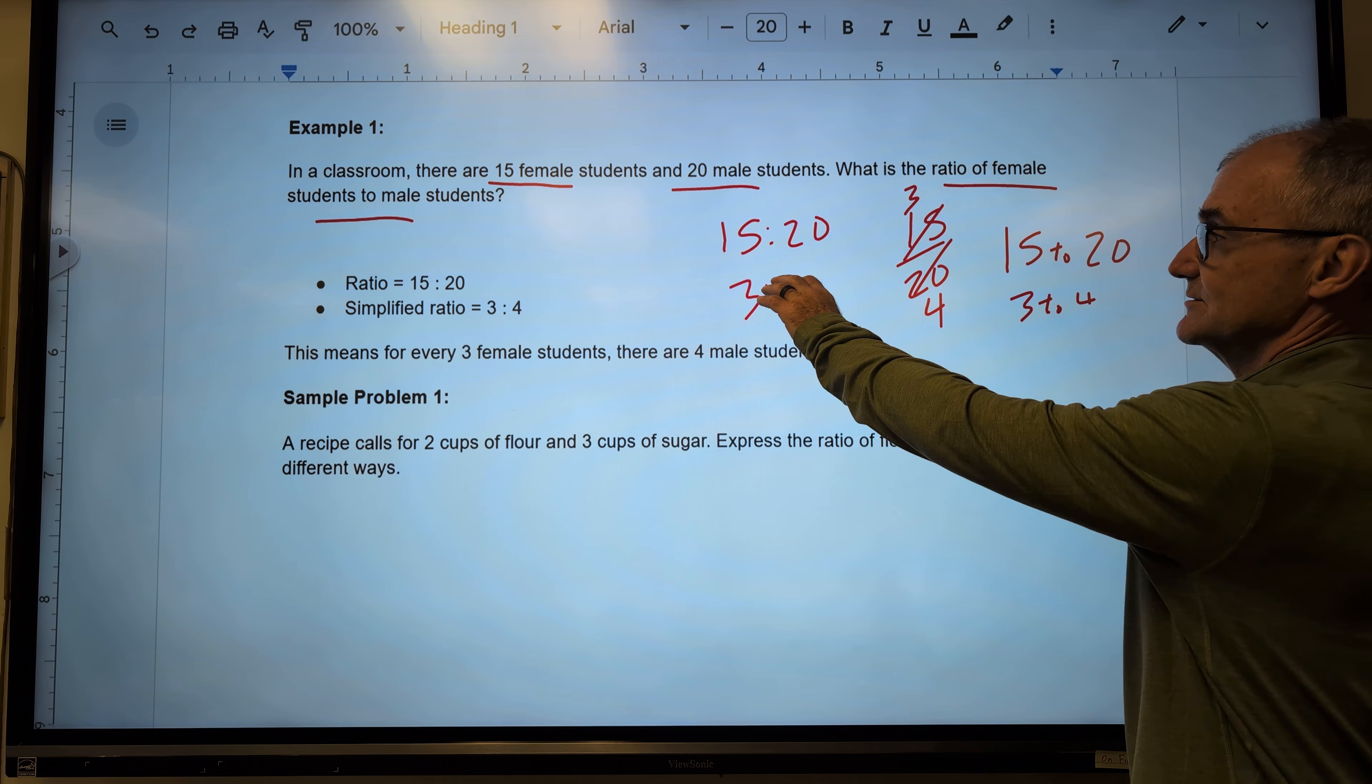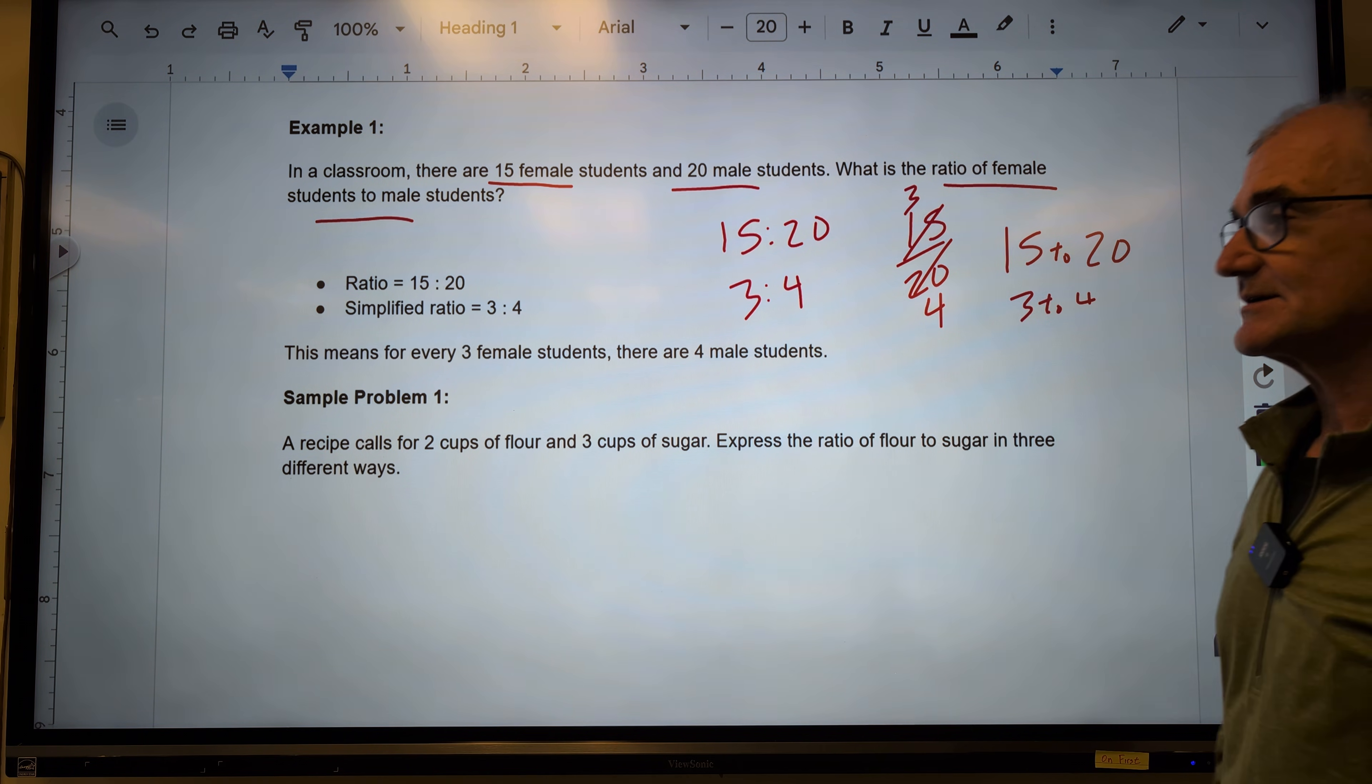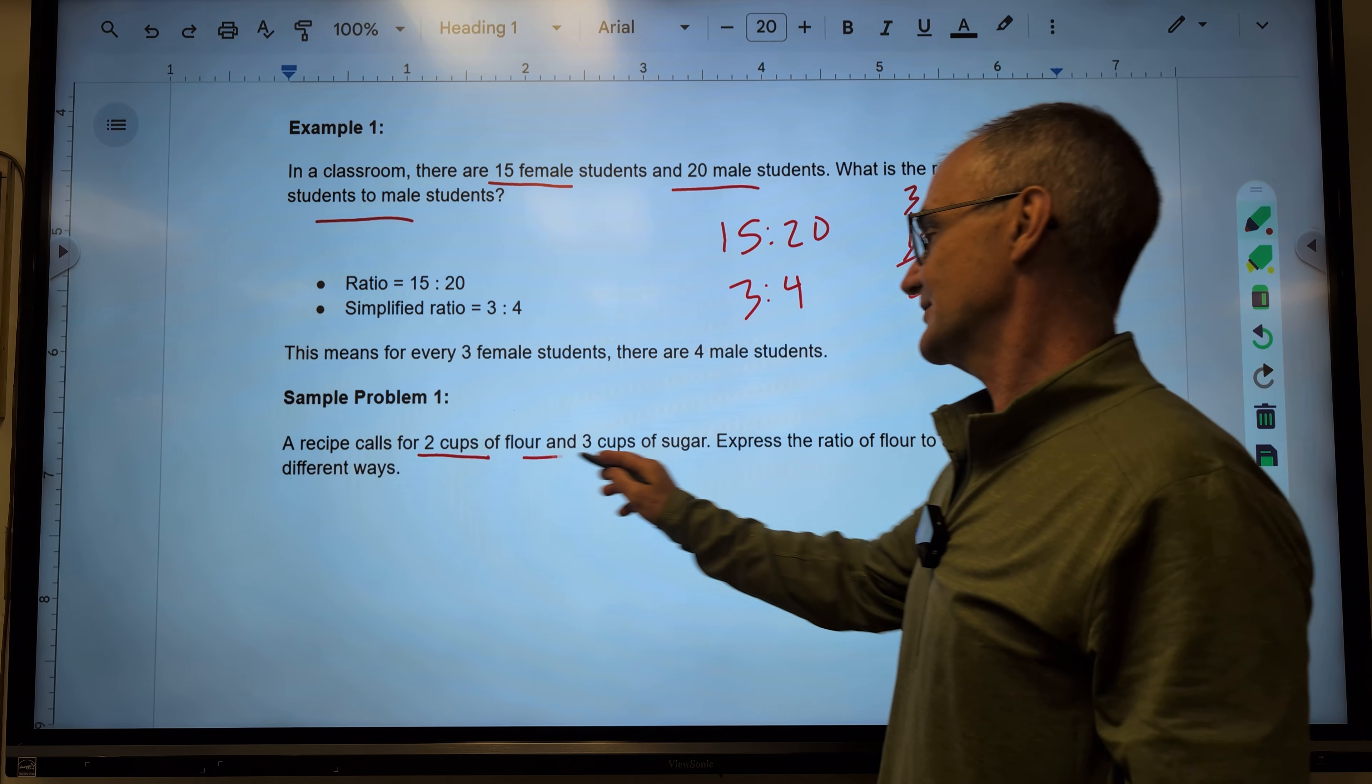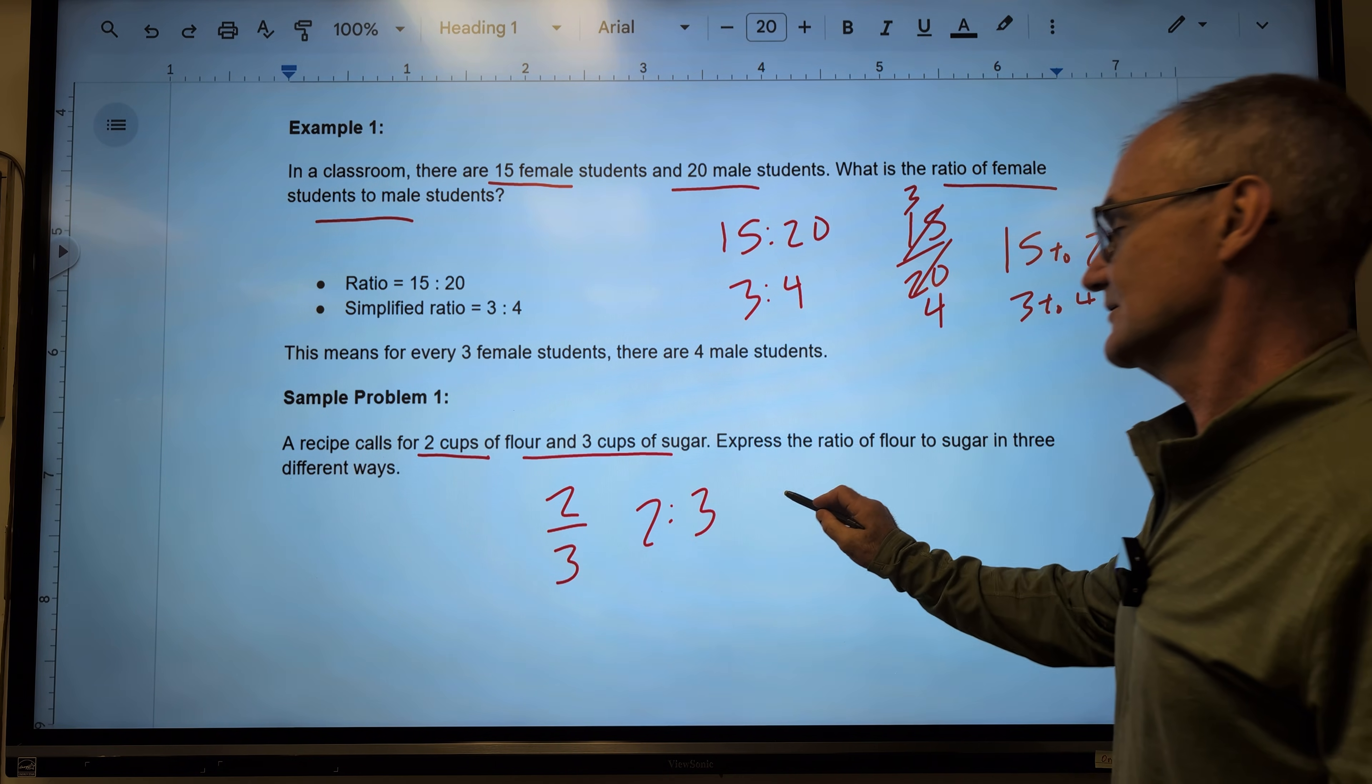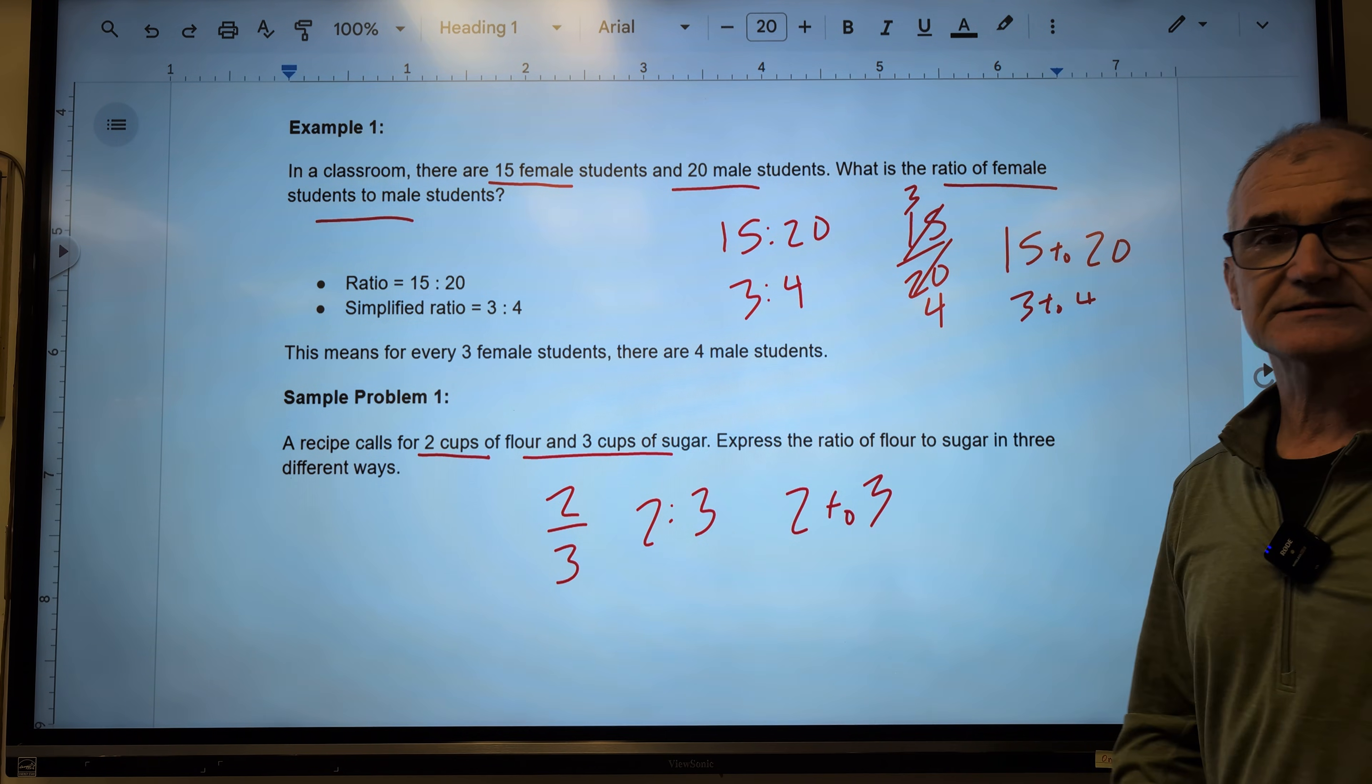Here's another sample problem. A recipe calls for 2 cups of flour and 3 cups of sugar. In that order, that is 2 to 3, 2 to 3, or 2 to 3. All equivalent ways to write the same ratio.